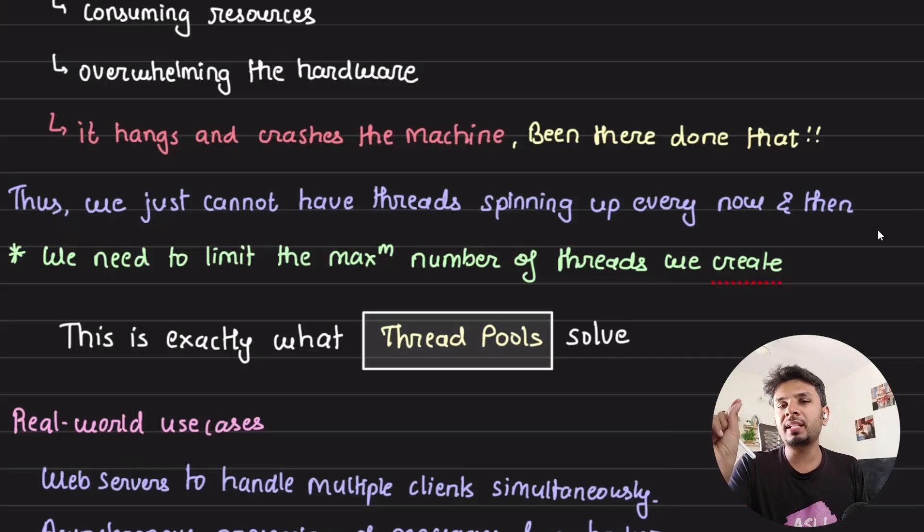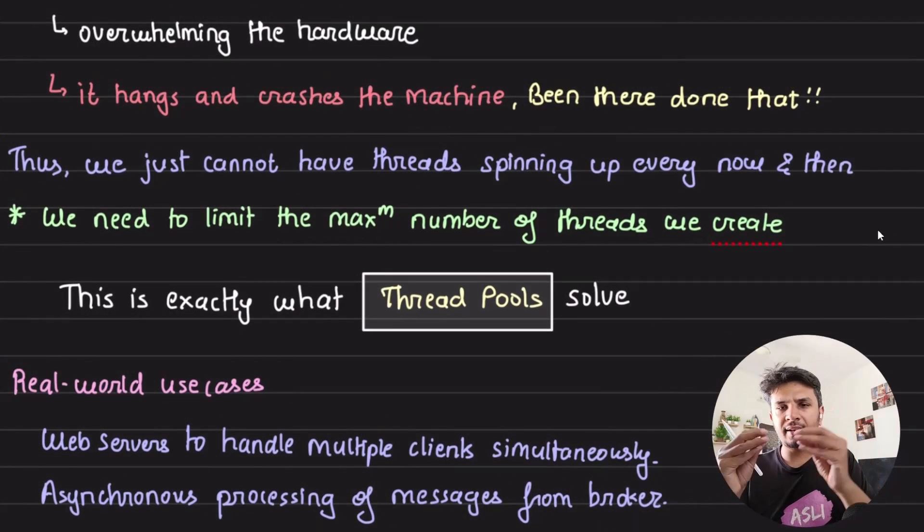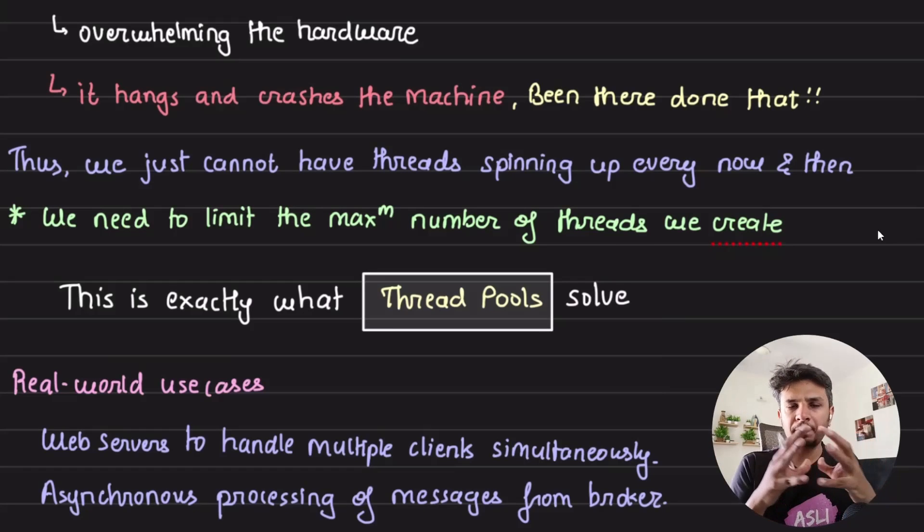This is where thread pools kick in. Some real-world use cases are when a web server wants to handle multiple requests concurrently - thread pool kicks in, it's a very straightforward example.